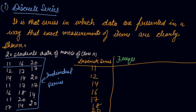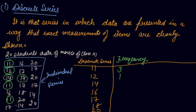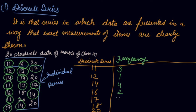Now write the frequency — the number of times each mark appears. 11 marks are obtained by 3 students. 12 marks by 1 student. 14 marks by 4 students. 16 marks by 2 students. 17 marks by 5 students. 18 marks by 1 student. 20 marks by 4 students. Adding all frequencies gives 20 students total.